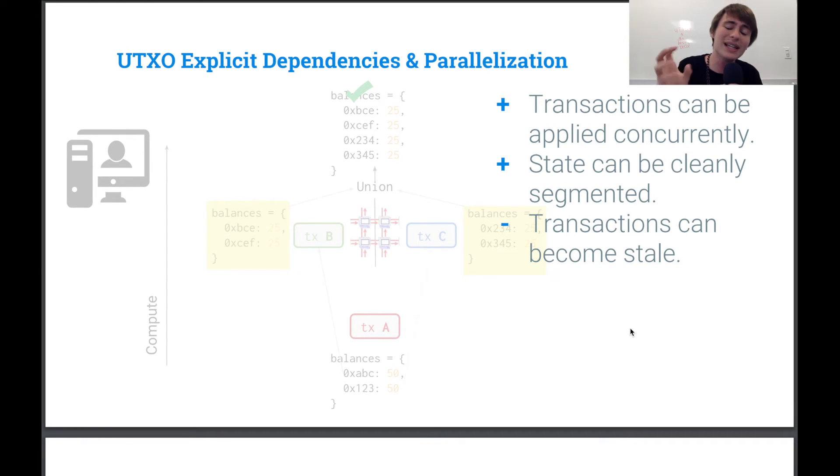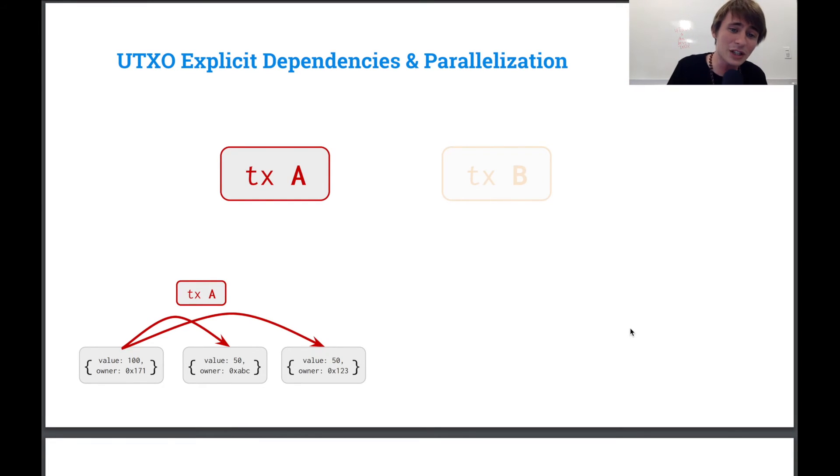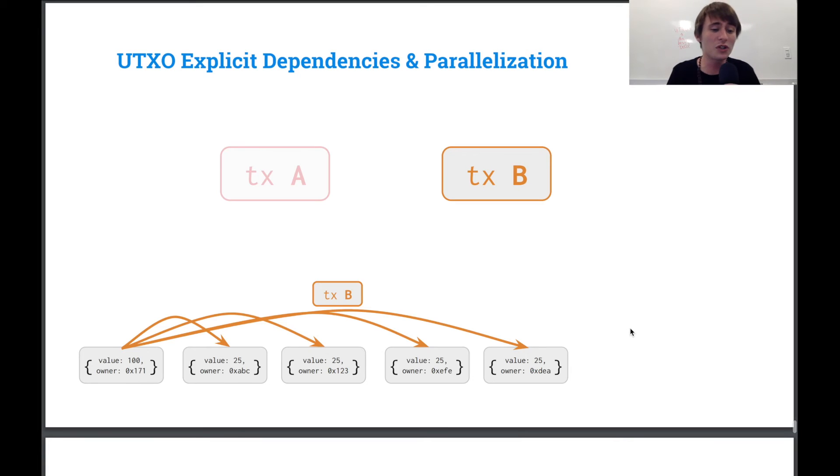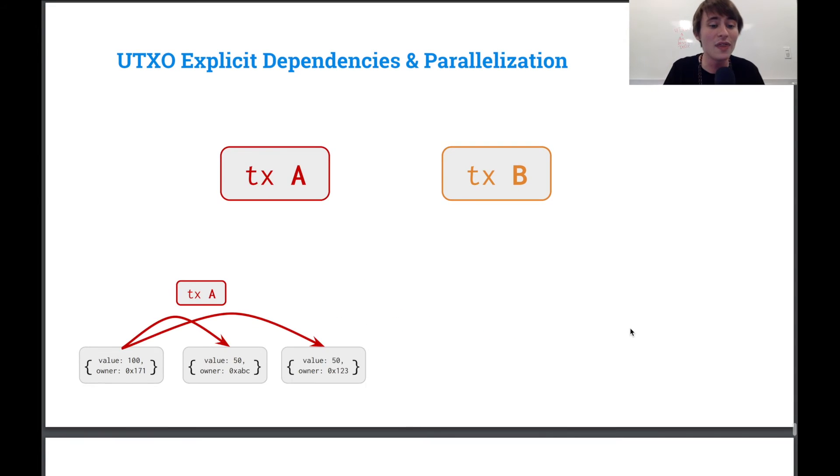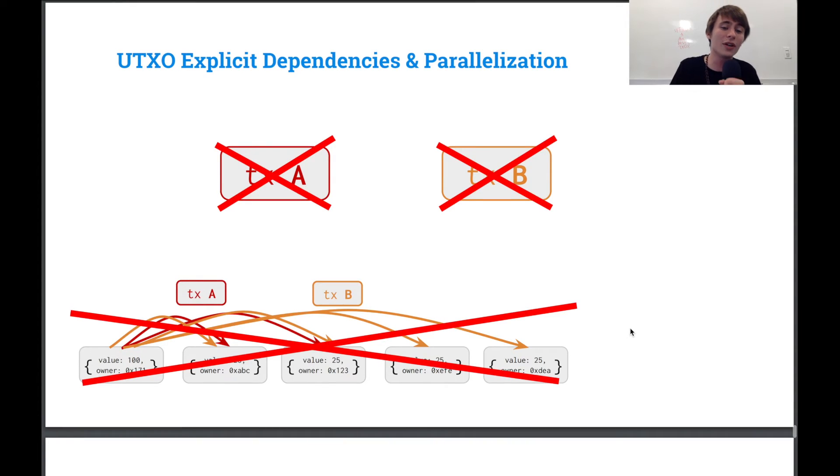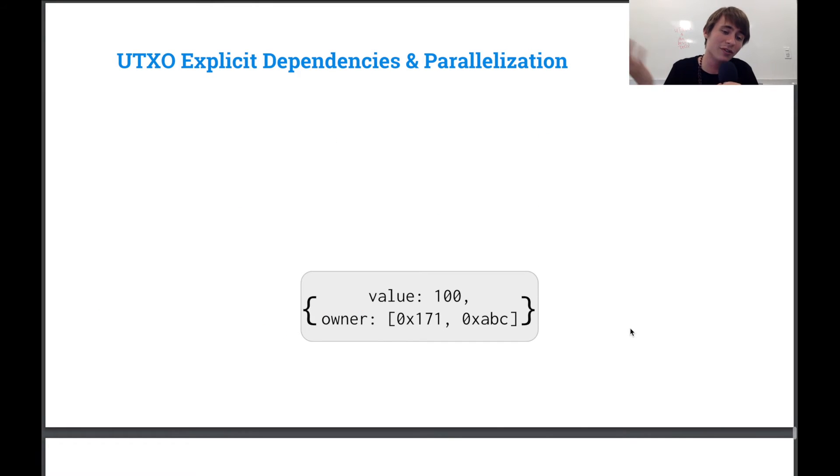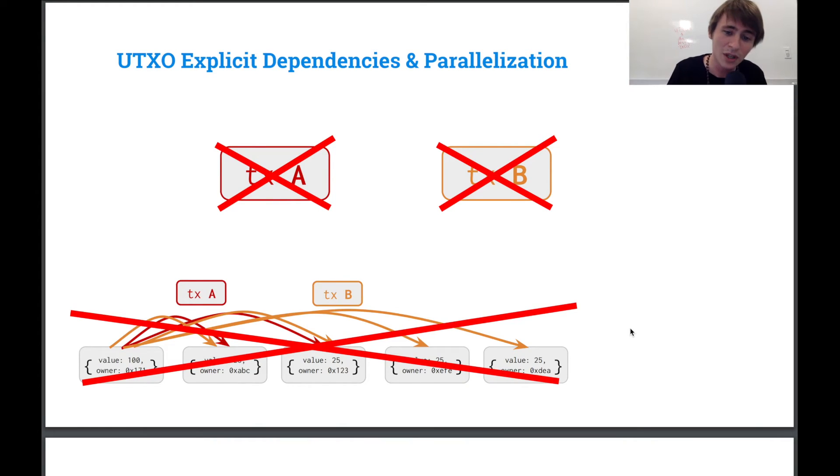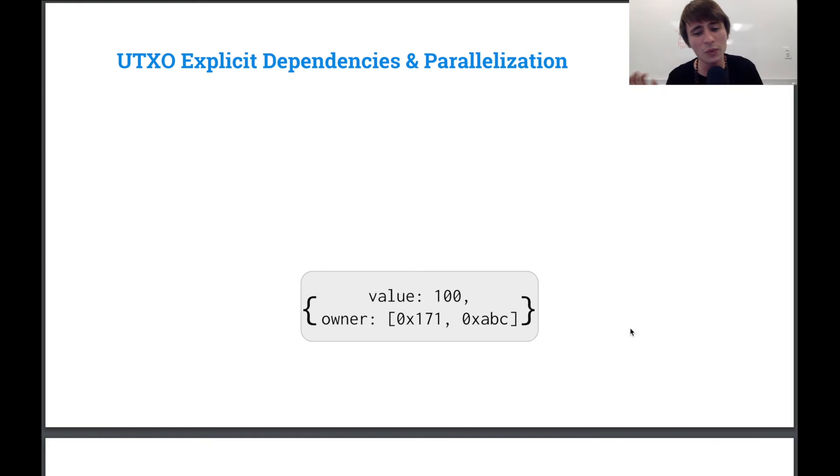Now, there is a bit of a downside where transactions can become stale when you are explicitly specifying your dependencies. That means that if your dependencies change, your transaction can be invalidated. So for instance, if transaction A and transaction B are both spending the same UTXO, then what can happen is only one of them can go through, you can't have both of them go through at the same time, of course.